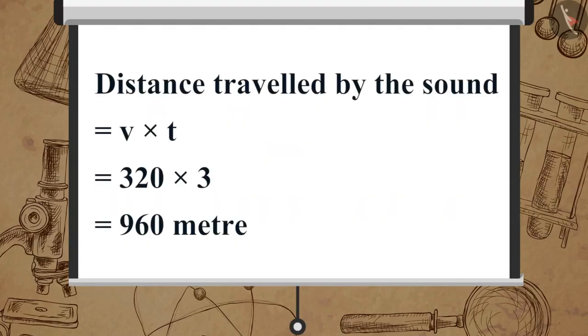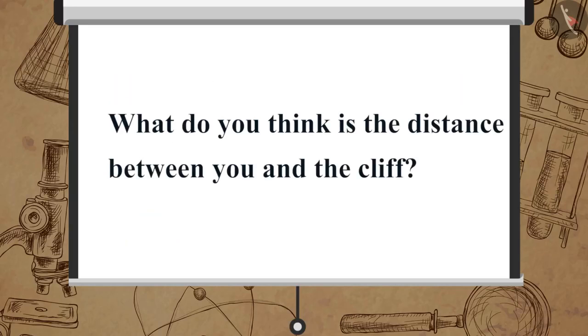We know distance travelled by the sound is equal to V multiplied by T, which is equal to 320 multiplied by 3, which is equal to 960 meter. Now, what do you think is the distance between you and the cliff?